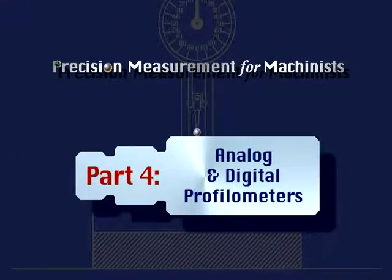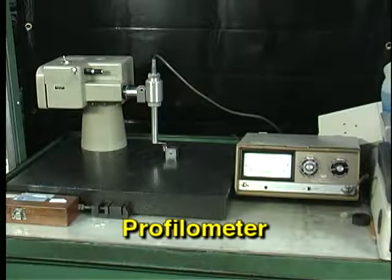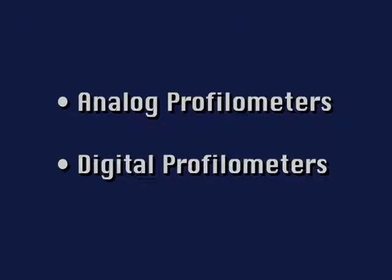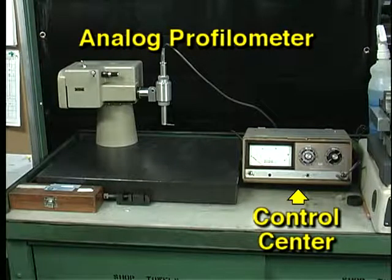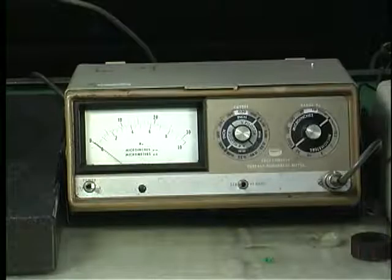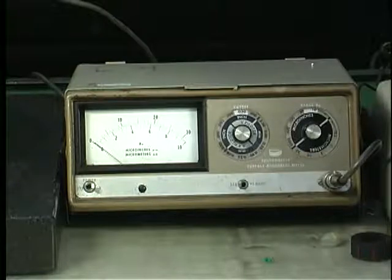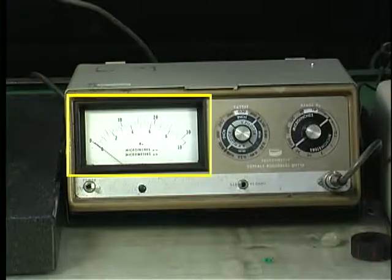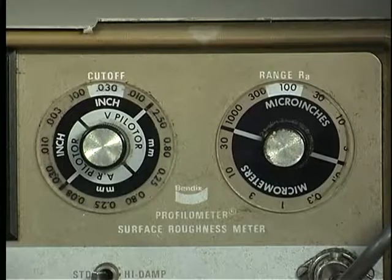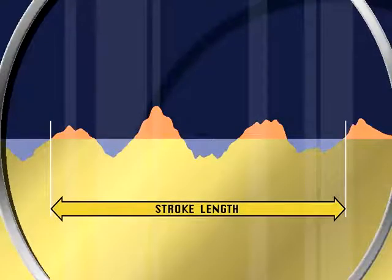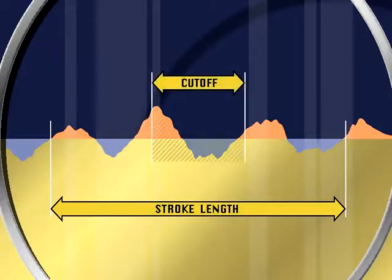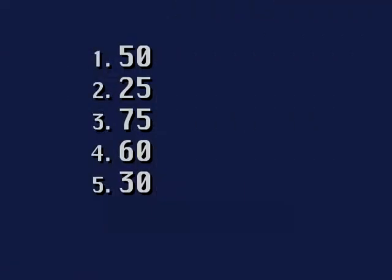Part 4: Analog and Digital Profilometers. A profilometer is typically an electronic device used to measure the profile of a surface in micro-inches. We will look at two types: analog and digital. The analog profilometer has two main components: the control center and the probe. The control center displays data acquired by the probe — it contains an amplifier that analyzes probe movements and displays results. The data is displayed on a meter. The dial on the left is labeled cutoff and is set at 30 thousandths. While the stroke determines the length of the area the probe will travel, cutoff refers to the sampling length from which roughness average is calculated.